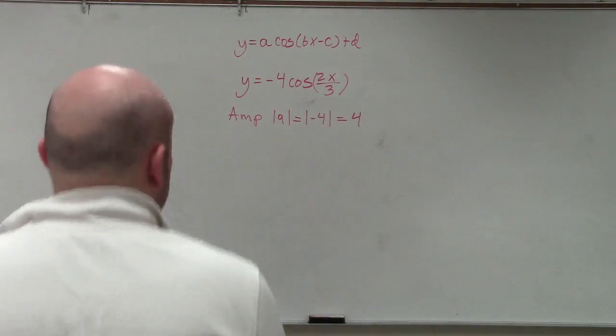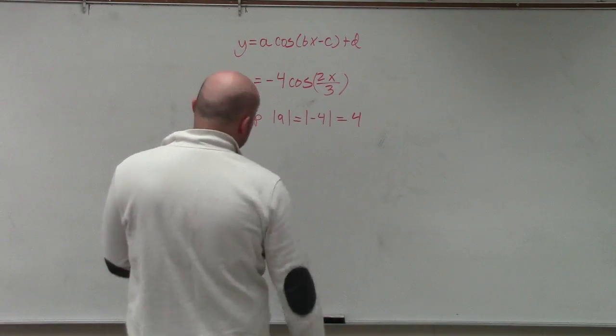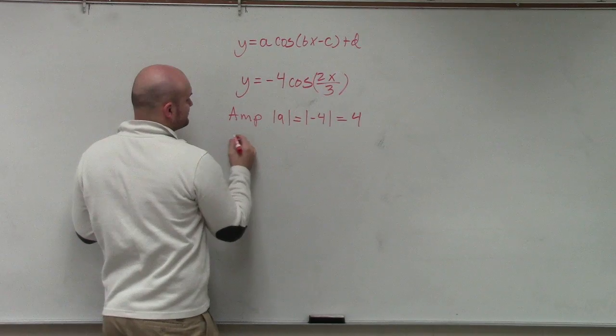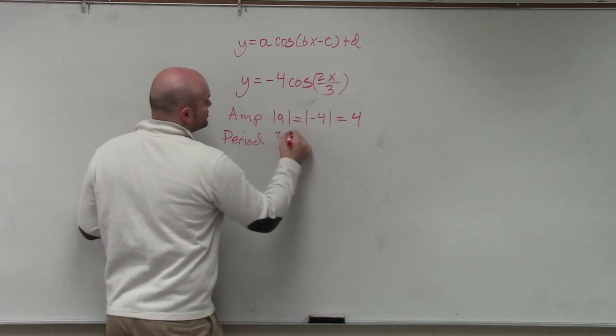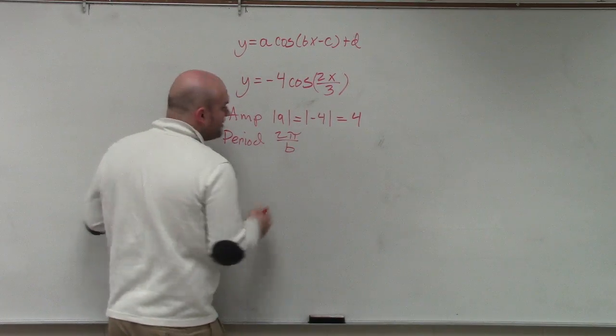So we've covered fractions quite a bit, so this shouldn't be anything brand new. But anyways, to find the period, the definition I gave you was 2π over b.